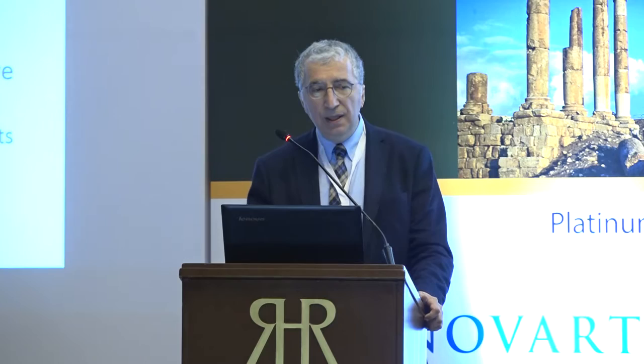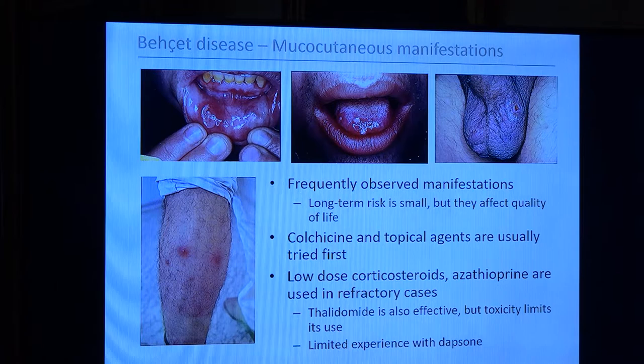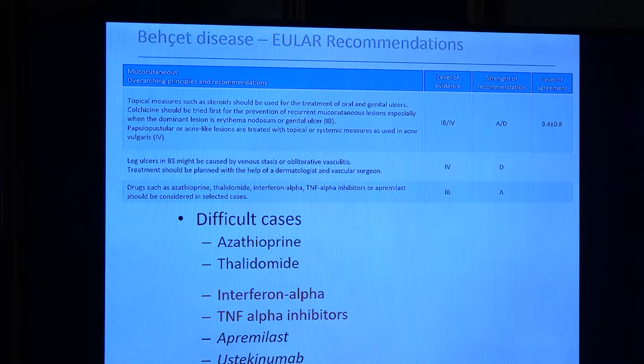Starting with the most common manifestations — mucocutaneous — the risk is quite small but usually associated with low patient quality of life. Colchicine is the preferred treatment along with topical agents. For refractory cases, steroids and azathioprine are quite helpful. For difficult cases, you can also try thalidomide. If really refractory, you can use interferon alpha and anti-TNF. We now have two other options — apremilast and ustekinumab — which can be tried if possible. For some refractory skin manifestations such as venous ulcers, triple compression bandages are usually the preferred treatment, as these are usually sequelae of venous congestion.